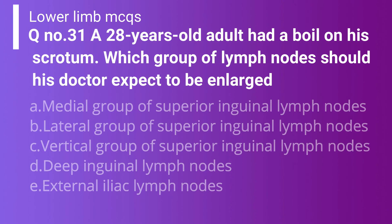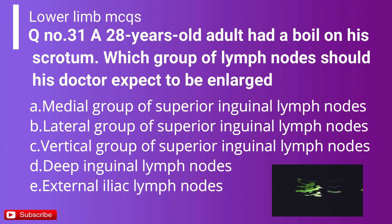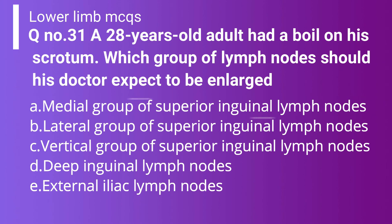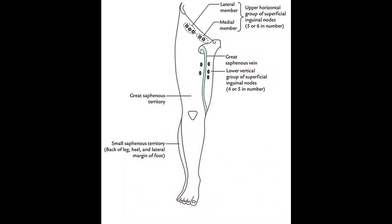Question 31: A 28-year-old adult has a boil on his scrotum. Which group of lymph nodes should his doctor expect to be enlarged? Option A: Medial group of superficial inguinal lymph nodes. Option B: Lateral group. Option C: Vertical group. Option D: Deep inguinal lymph nodes. Option E: External iliac lymph nodes. The correct answer is the medial group of superficial inguinal lymph nodes, because it receives lymph drainage from the medial side of the leg and also from the scrotum.